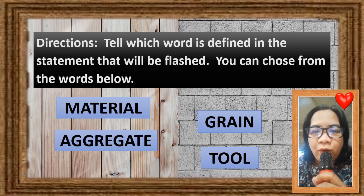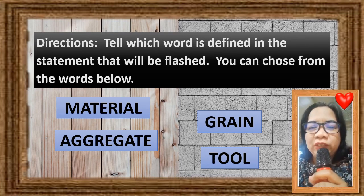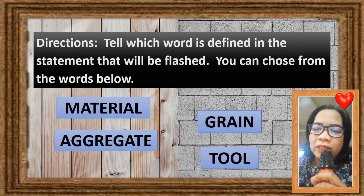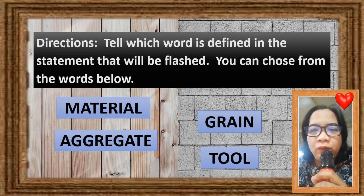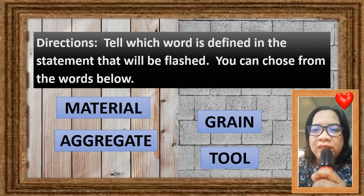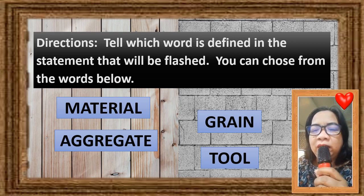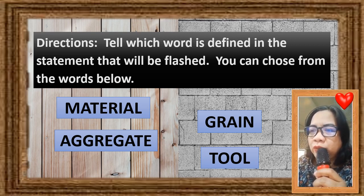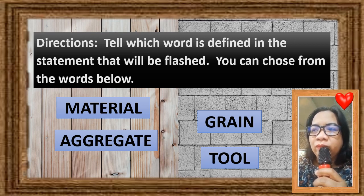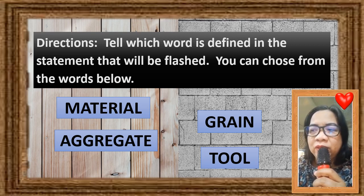There are four words in this lesson that you need to understand. So let us have the unlocking of difficult words in a short activity. Directions: Tell which word is defined in the statement that will be flashed. You can choose from the words below. These words are: material, aggregate, grain, and tool.